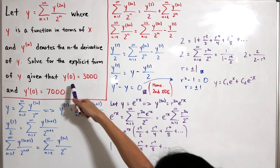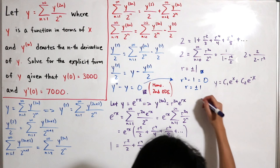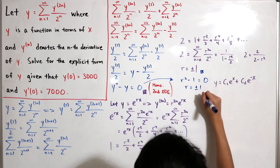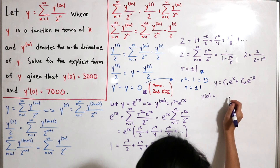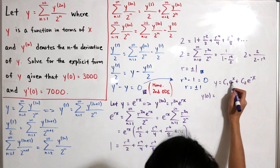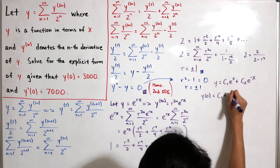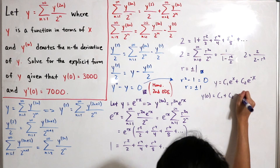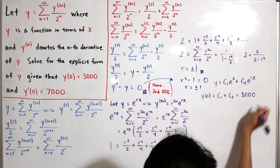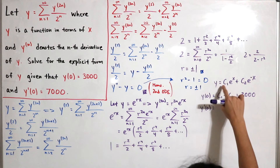Applying the first initial condition y(0) = 3000: plugging x=0 into the general solution gives e^0 = 1 for both terms, so C1 + C2 = 3000.